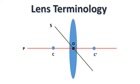Secondary ray or S, ray passing through the optical center but not parallel to the principal axis. Focal length or F, the distance between the focus and optical center.